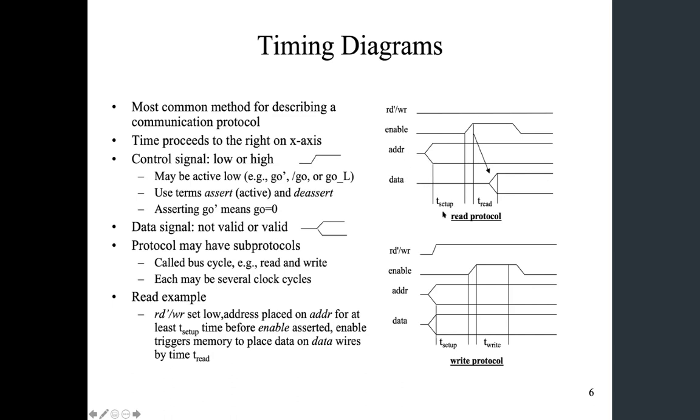So what this read protocol is trying to describe, if you want to read, because this is a read prime or read bar, this is indicating that really is active low. So when you have a zero voltage or low logic, low logic zero, and that's the indication of we're doing a read operation.